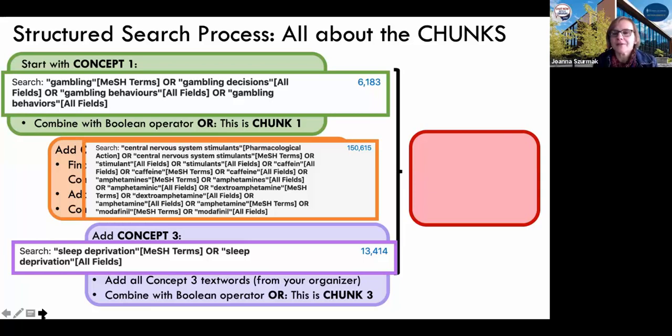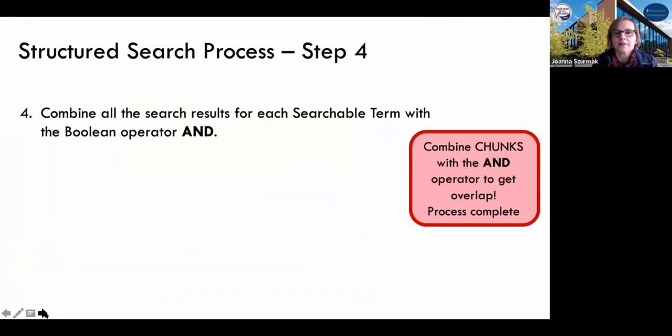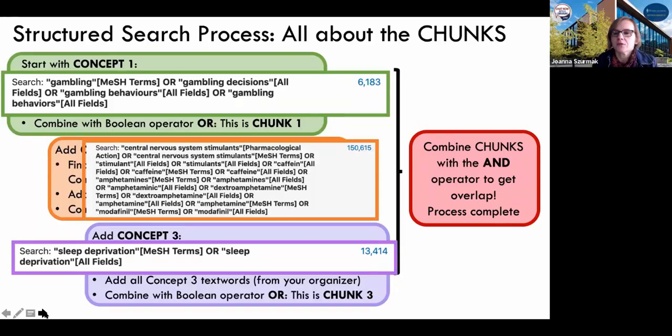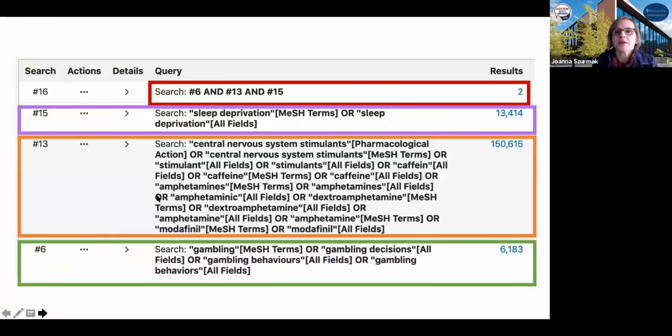The final step is going to be adding all three of these using ANDs. We will be limiting the search using ANDs. Quick question: What do you combine 6,000, 13,000, and 150,000 together with ANDs? We're going to focus this search. We're going to use the Boolean operator AND to combine all the chunks and to do overlap. Ta-da, process complete. We only got two.